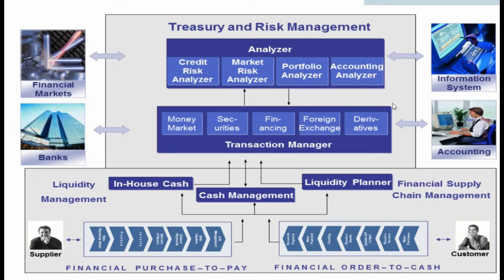Regarding implementation considerations: to use SAP Treasury and Risk Management, we first need to activate the enterprise extension EA-FS — Financial Services. We need to activate enterprise extension EA-FS Financial Services in the customizing activity 'Activate Business Functions'. The transaction code for this is SFW5.